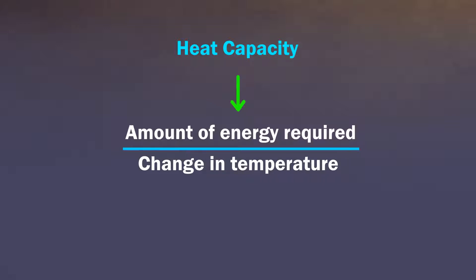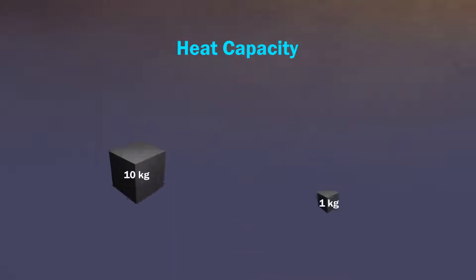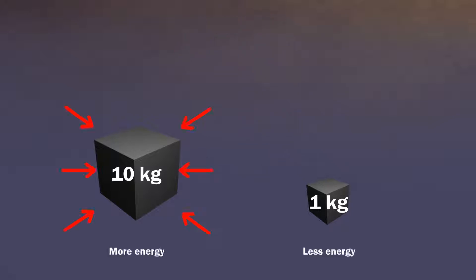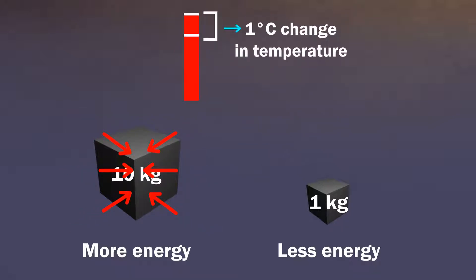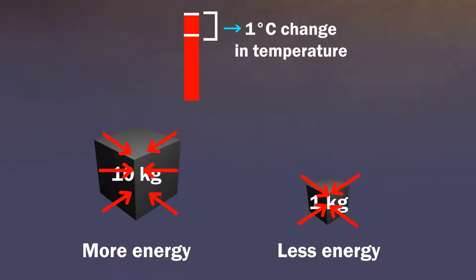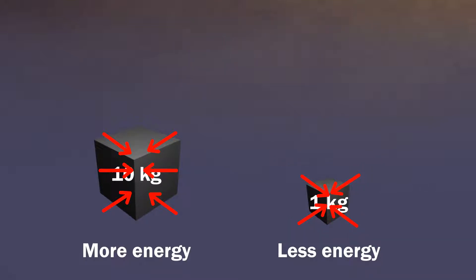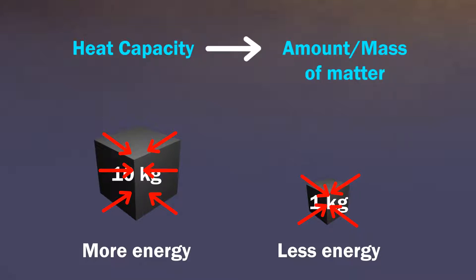If you notice, there is no mention of mass in the above formula. For a 10 kilogram mass, we will require more energy to raise the temperature by 1 degree compared to a mass of 1 kilogram. So we can say that heat capacity depends on the amount or mass of matter.